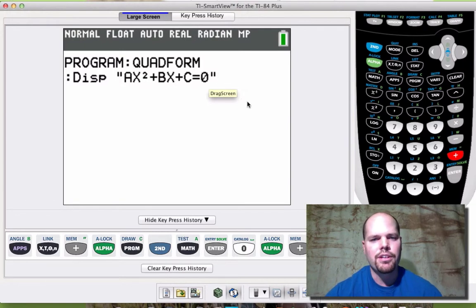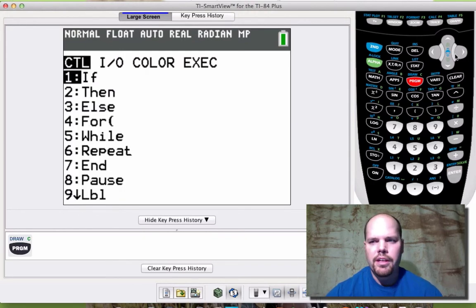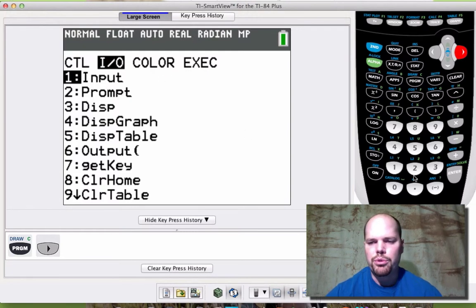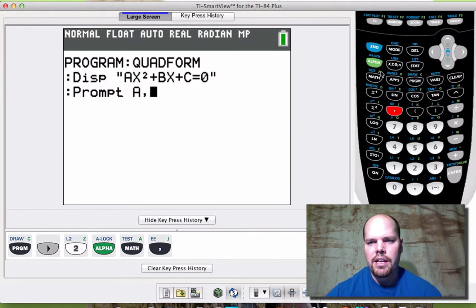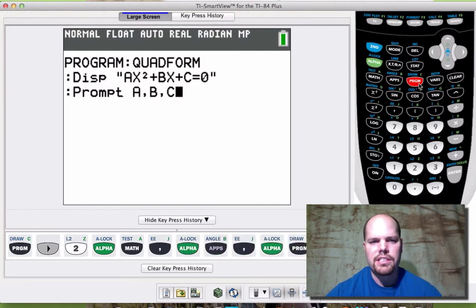The first thing we want to do is input our A, B, and C values so that we can eventually use those in the quadratic formula. So press enter to get a new line of code. Let's do a prompt. So program, input outputs, and we want to prompt number two. Prompt A, B, and C. So alpha A, comma, alpha B, comma, and alpha C. That'll just ask you A equals, enter it in, press enter, and so forth, B and C when we run this.